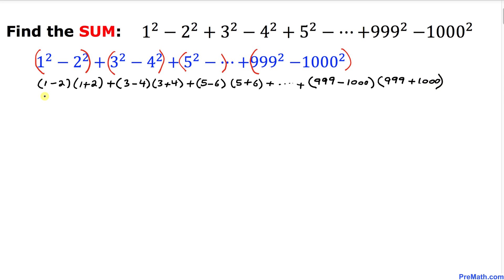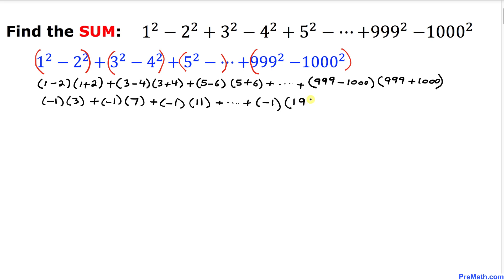Now let's simplify. Each group gives us −1 times the sum, so we get (−1)(3) + (−1)(7) + (−1)(11) + ... + (−1)(1999). Since −1 is common to all terms, I'll factor it out, leaving: −1 × (3 + 7 + 11 + ... + 1999).